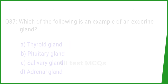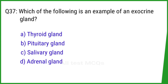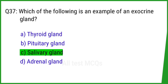Question number 37. Which of the following is an example of an exocrine gland? The right answer is option C: Salivary gland.